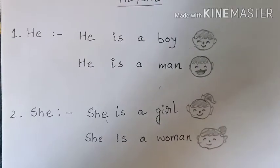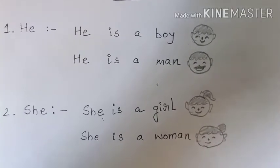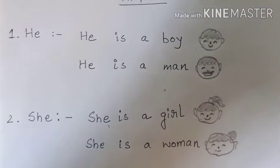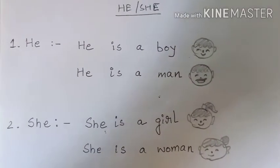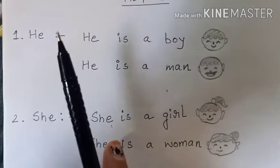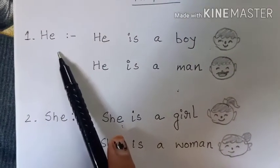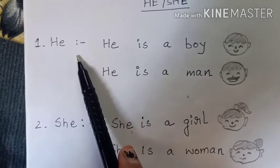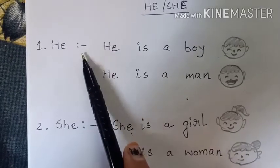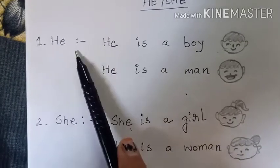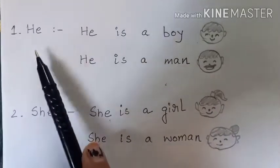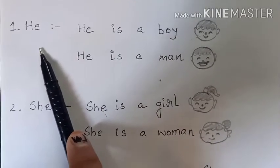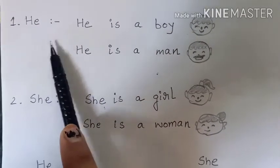Okay students, so we saw where should we use 'he'. We use 'he' before boy, man, father, grandfather, uncle, king — all masculine gender.